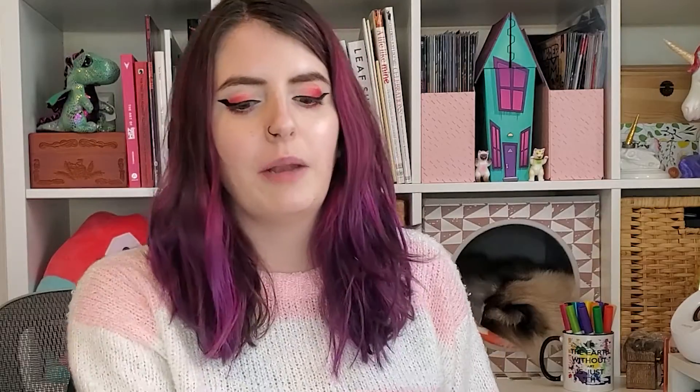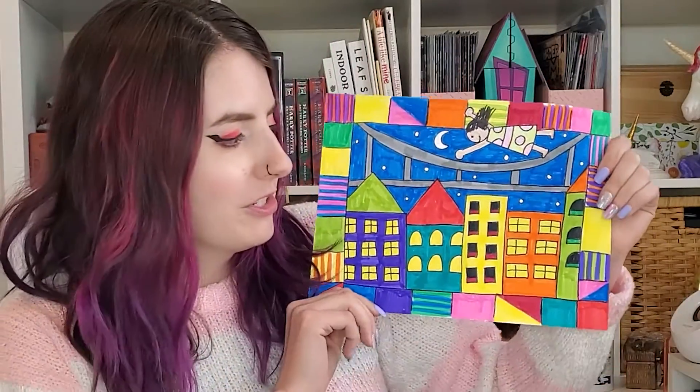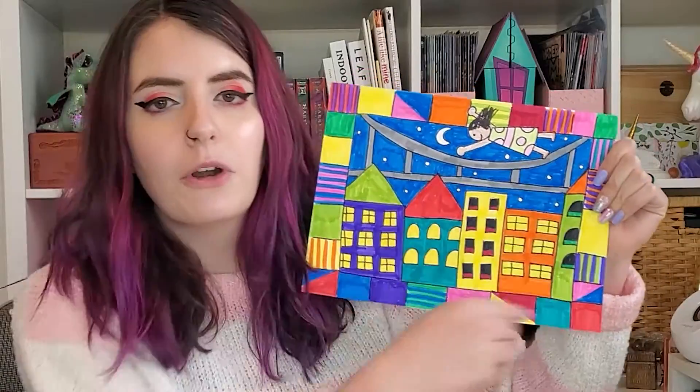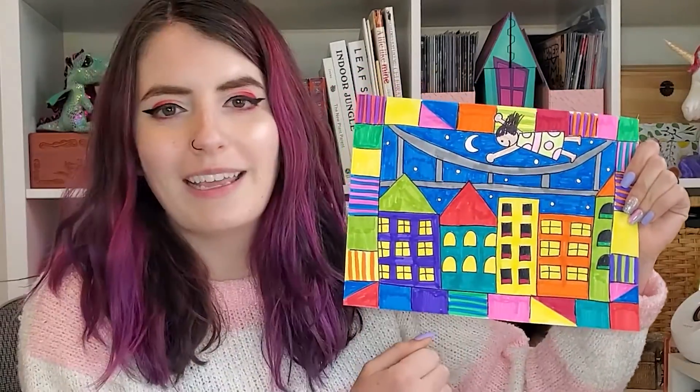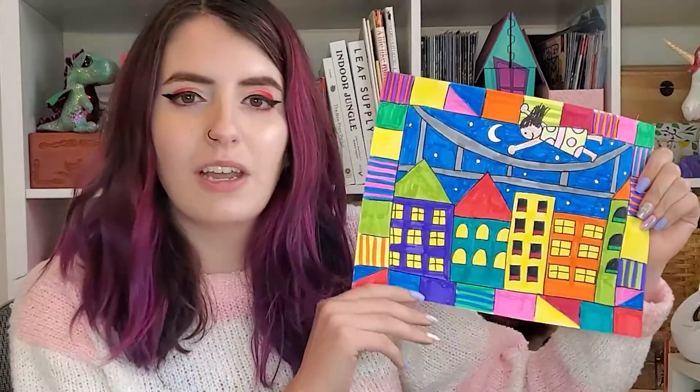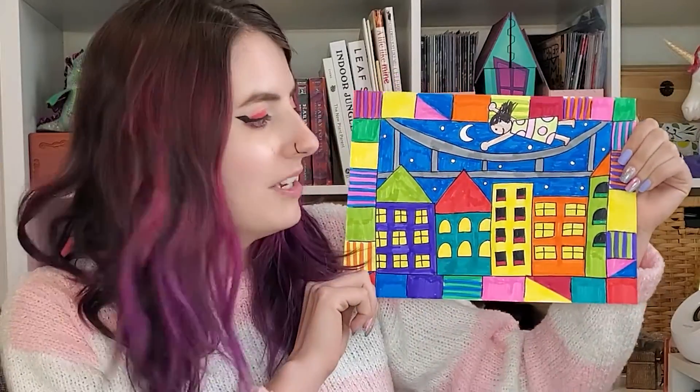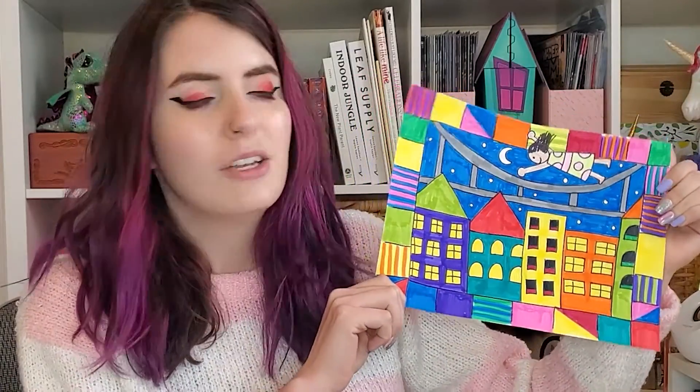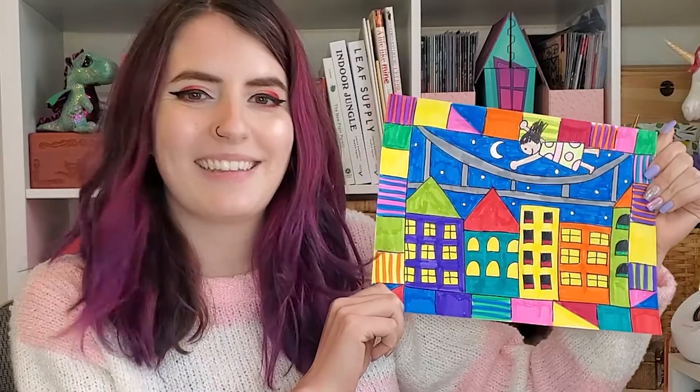For our project today we are going to be inspired by Faith Ringgold's Tar Beach story and make our own drawing similar to Tar Beach. So I will show you how to make your border, your person flying over your city, and you can also be creative and make the city look any way that you want. So go ahead and grab your supplies and let's get started.